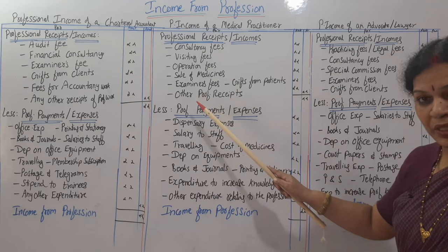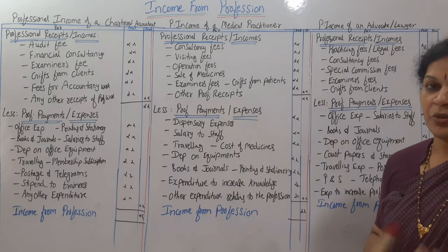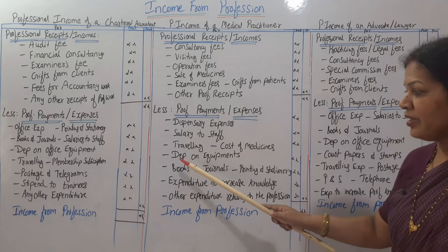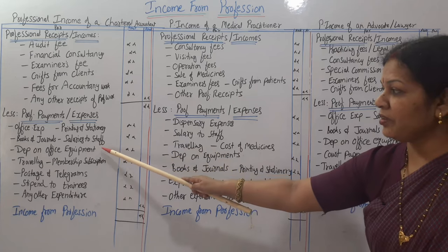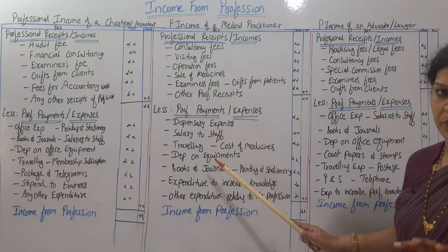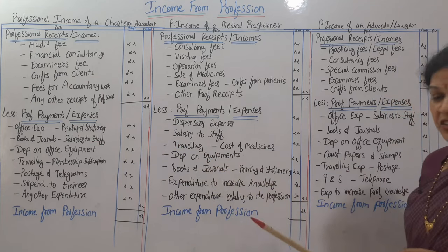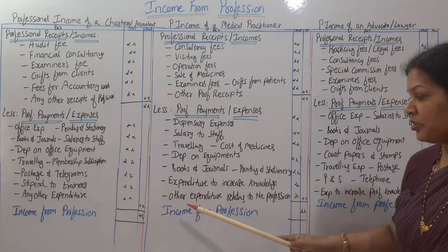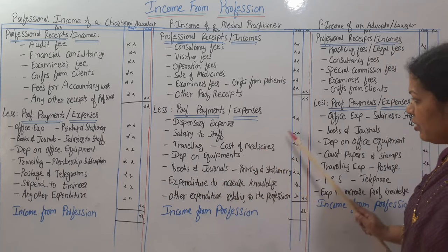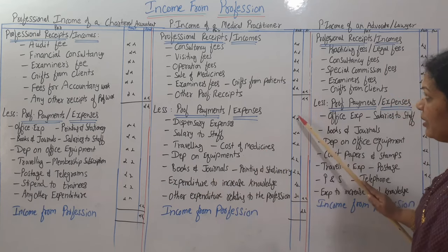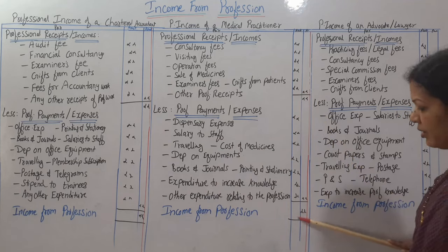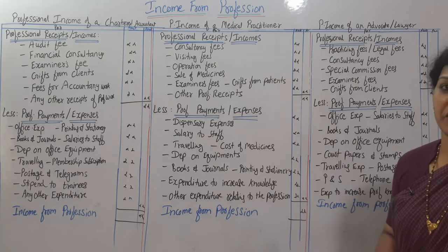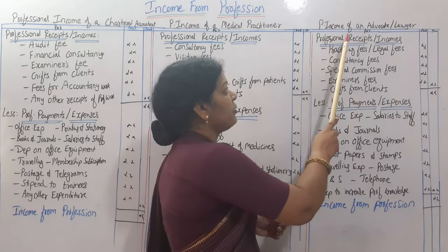From that total we deduct professional payments or expenses for a doctor: dispensary expenses, salary to staff, traveling expenses, cost of medicines, depreciation on medical equipments, depreciation on office equipment, books and journals, printing and stationery, expenditure to increase knowledge or update the doctor's skills, and any other expenditure relating to the profession. Total these expenses and deduct from income — you get income from profession for a medical practitioner.